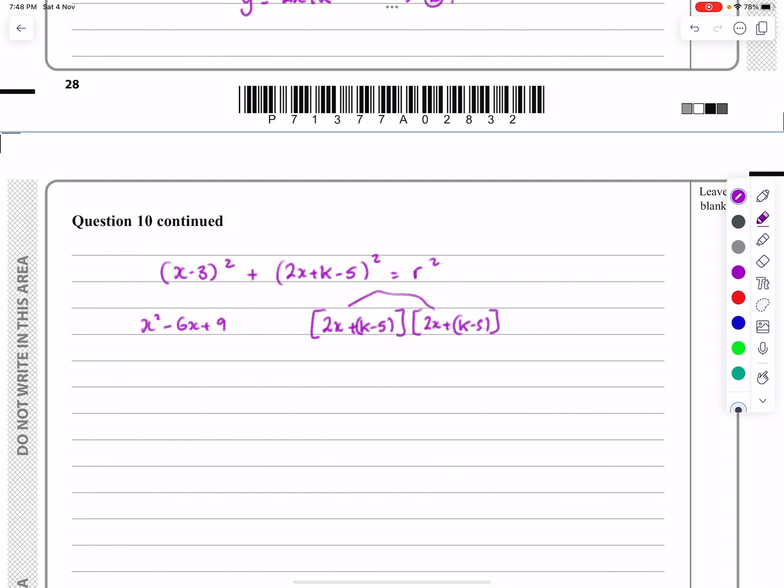So I got that to be x² - 6x + 9. And let's just talk about the other thing here. I actually treated this as (2x + k - 5) multiplied by (2x + k - 5). And then what I did was this times this, this times this, this times this, and this times this using your FOIL. I'm not going to show you all that working, obviously, because the video would take forever if I was doing bits and pieces like that.